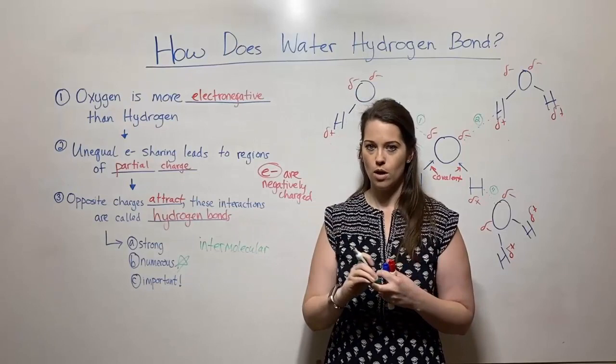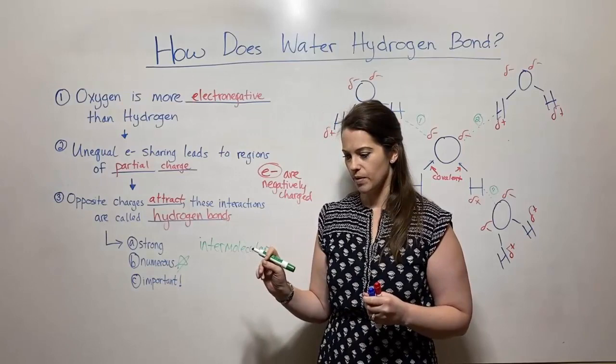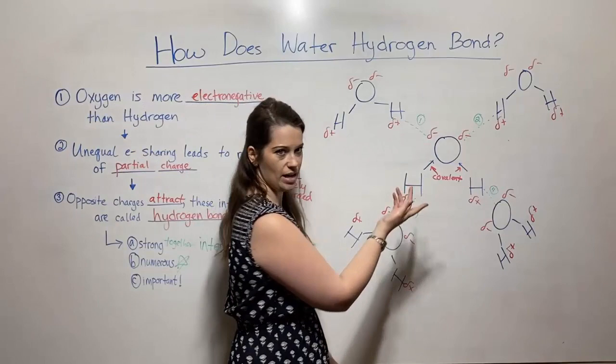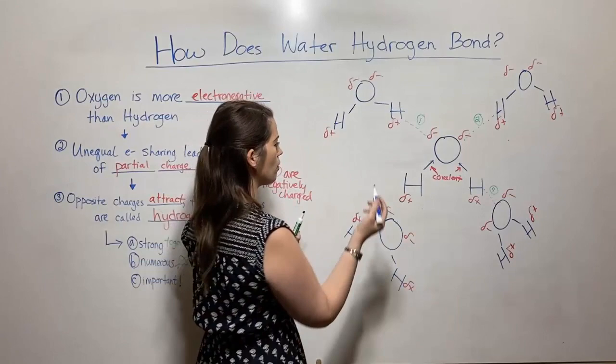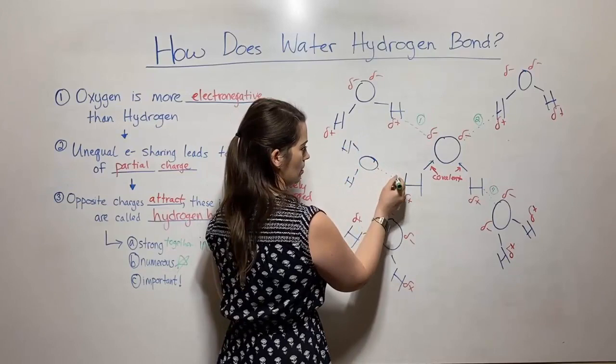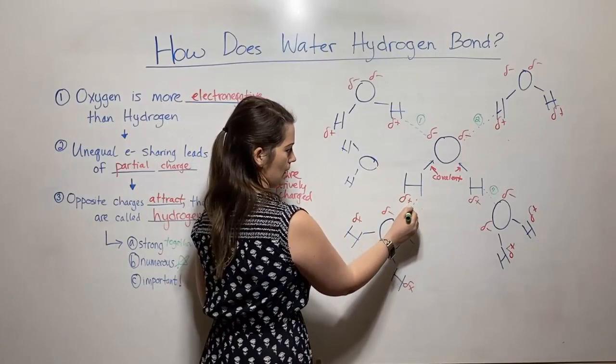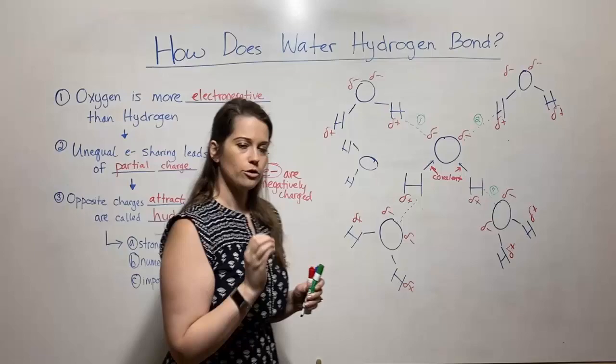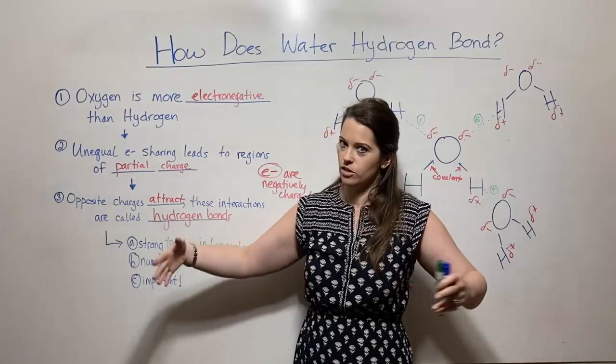They are also strong — but I want to add a caveat: they are strong together. An individual hydrogen bond can break really easily, and another water molecule can come in and reform it. So individual hydrogen bonds are not strong — they're not nearly as strong as covalent bonds — but there are so many of them. When you have billions, trillions, and quadrillions of them, they really add up, and that makes them very, very important.